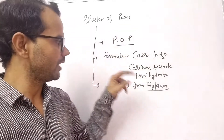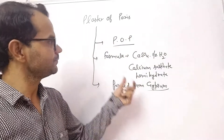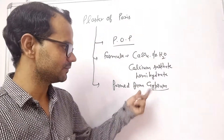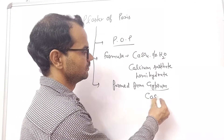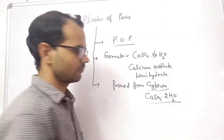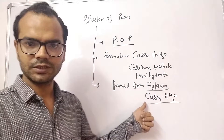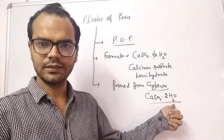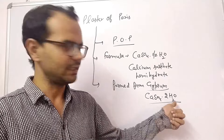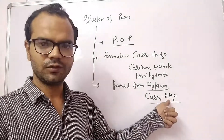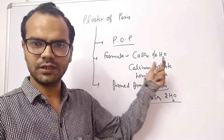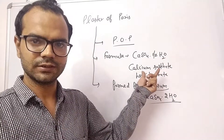We prepare POP from gypsum. Gypsum is calcium sulfate dihydrate — CaSO₄·2H₂O — where '2' stands for two water molecules (dihydrate). POP, on the other hand, is the hemi-hydrate form, meaning it contains only half a water molecule.